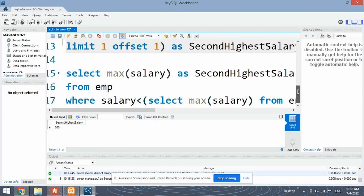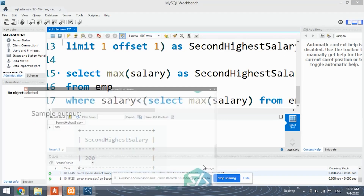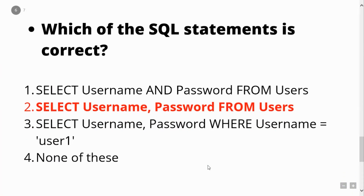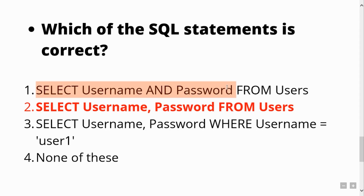I hope you've understood this solution — keep practicing! For the quiz we asked at the beginning, which of the SQL statements is correct — the answer is option two. In the first option, 'select username and password,' the keyword 'and' is not used while retrieving data.